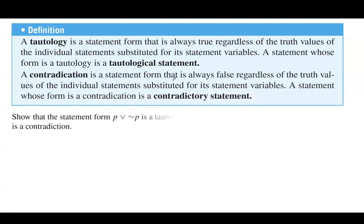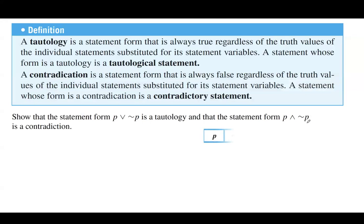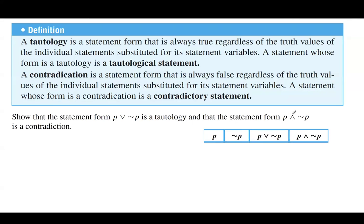We want to show that the statement form P OR NOT P is a tautology, and P AND NOT P is a contradiction. Good to remember these two examples: P OR NOT P, and P AND NOT P. One of them is connected by OR, the other is connected by AND.